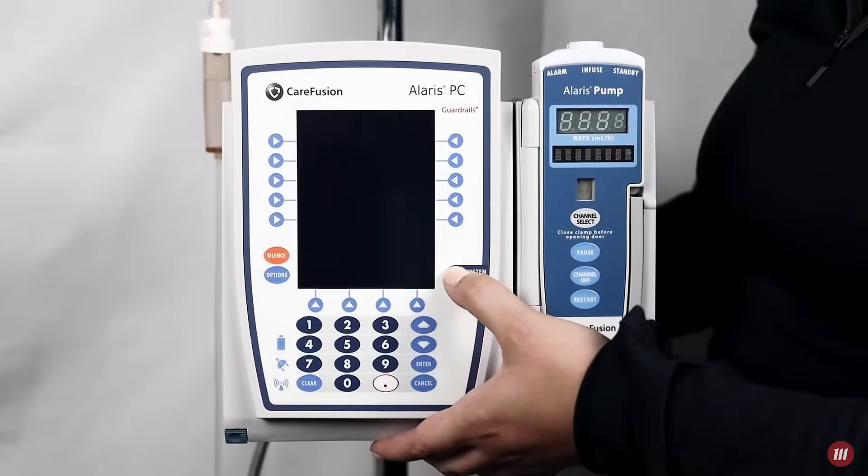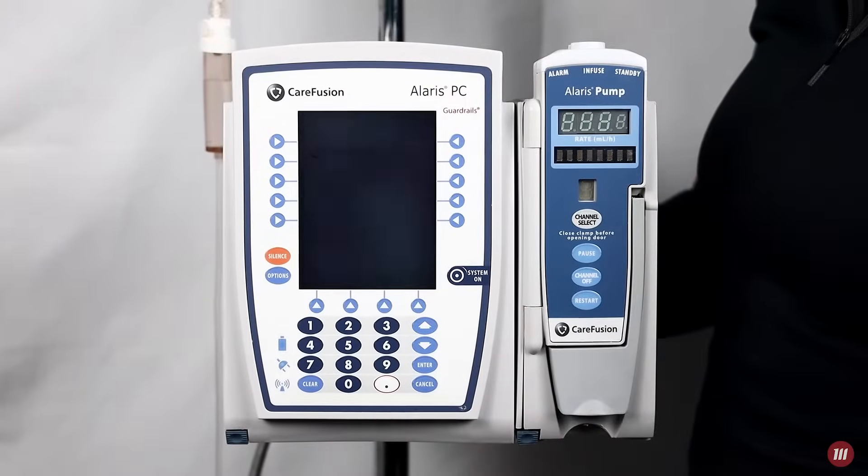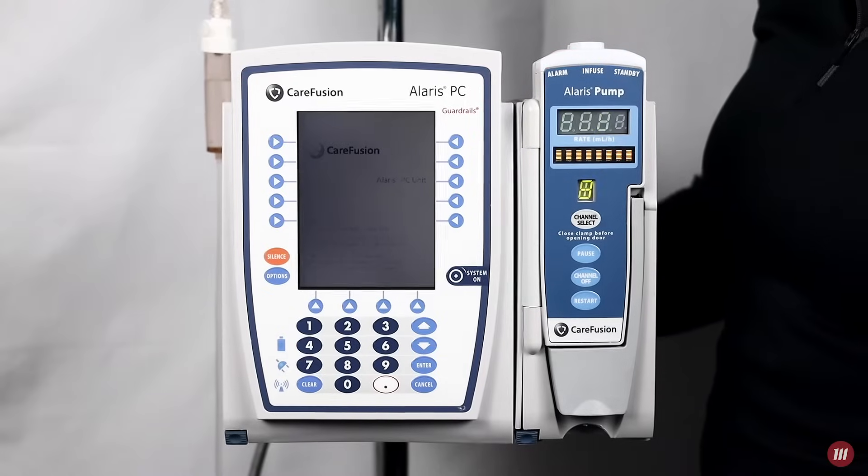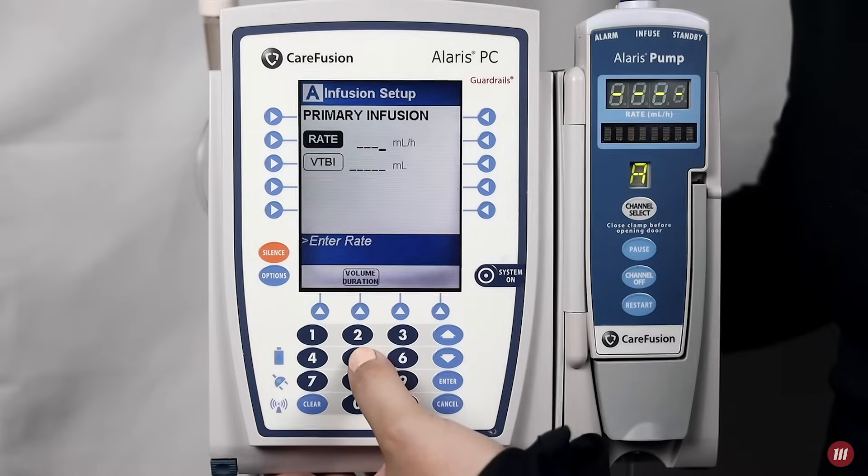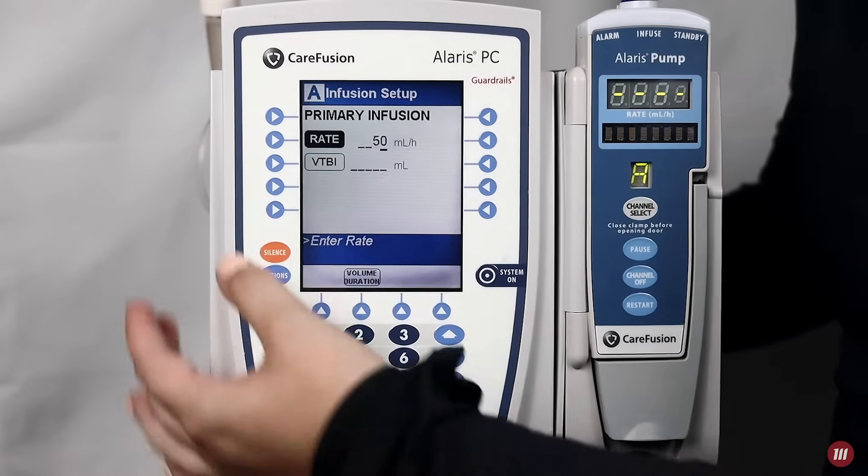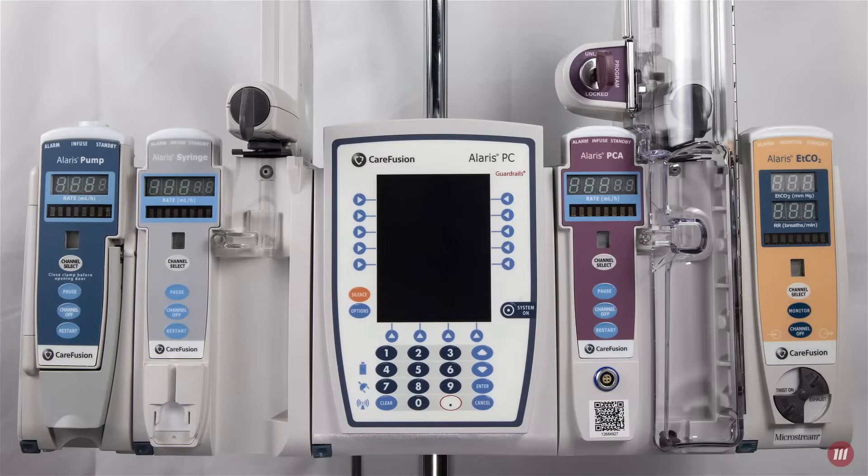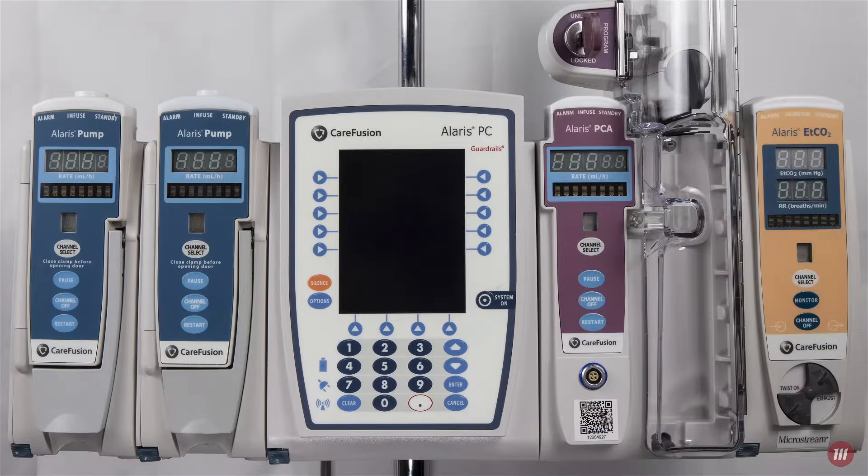The Alaris system can be powered through a wall outlet or through the internal battery that can last up to six hours. The easy-to-read screen and numeric keypad make it simple to program an infusion. Up to four modules of any combination can be attached to the PCU.